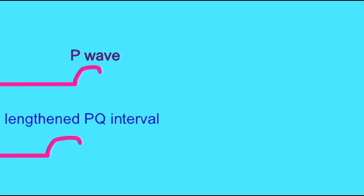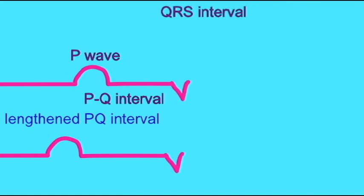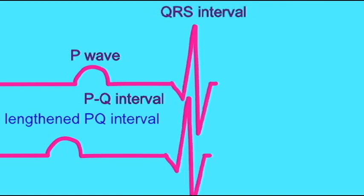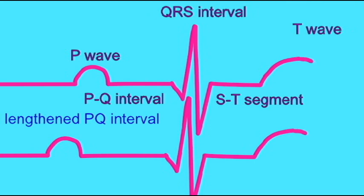The PQ interval can indicate something about heart function. Longer PQ intervals may result from weak SA impulses or damage to the AV node. There may be scar tissue formed during heart disease or rheumatic fever.